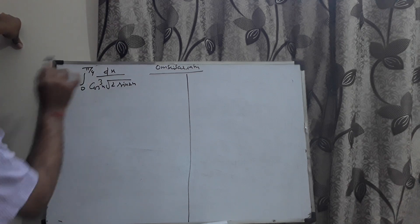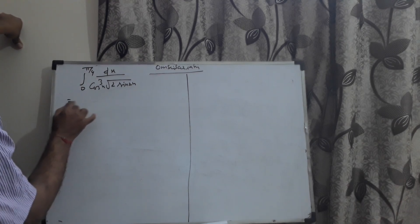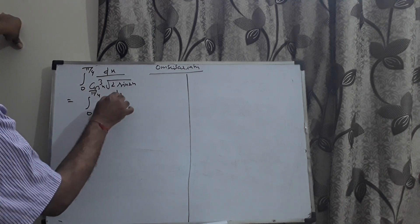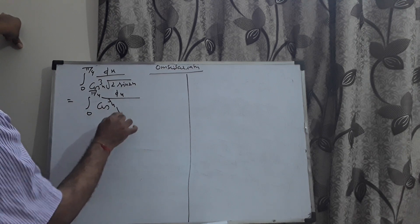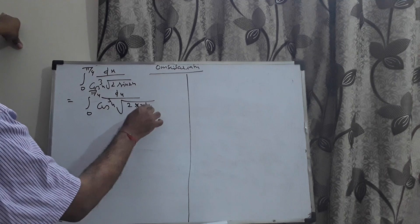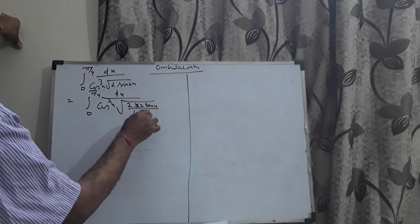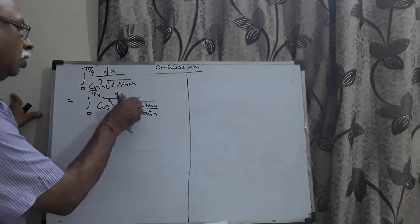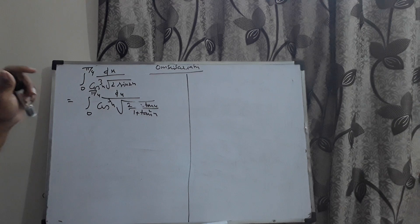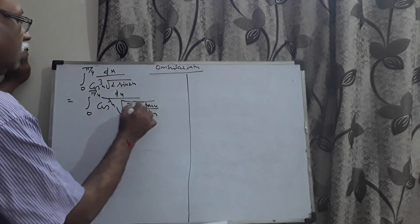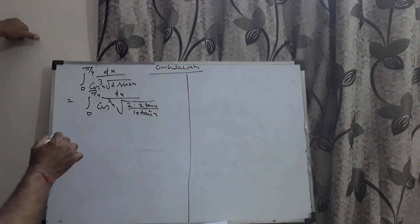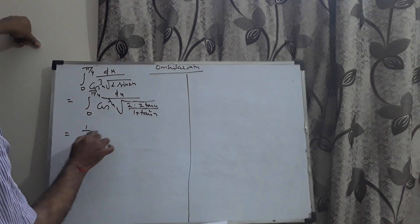I will write sin2x as 2tanx/(1 + tan²x) — this is the second formula for sin2a. The two formulae for sin2a are: 2sinA·cosA, and 2tanA/(1 + tan²A). I'm using the second formula: 2tanx/(1 + tan²x). The cos³x goes to the numerator, and the root of 4 can be brought out, giving a factor of 1/2.